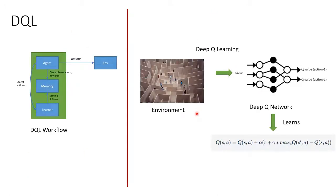Deep Q-learning helps solve the state space problem. In DQL, we introduce a neural network — also called DQN, which stands for Deep Q-Network. The network learns the Q-function by sampling experiences from a memory buffer. In a DQL setup, the agent interacts with the environment and gathers experiences — the new state and rewards — which are stored in a memory buffer. A learner model samples from the memory and trains a neural network to predict future Q-values for any given state. In other words, the learner finds the best combination of weights and biases to predict a target Q-value given any state.